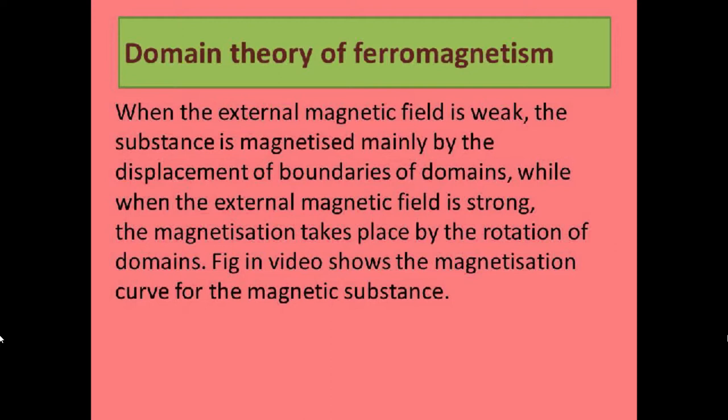In the next part, there is an explanation of the magnetization curve of a magnetic substance. When the external magnetic field is weak, the substance is magnetized mainly by the displacement of the boundaries of the domain. When the external magnetic field is strong, the magnetization takes place by the rotation of the domain. The figure shows the magnetization curve for the magnetic substance.